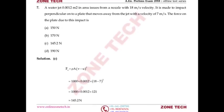Question number 7: A water jet of 0.0012 m² area issues from a nozzle with 18 m/s velocity, impacting perpendicular on a plate moving away at 7 m/s. Find the force on the plate. Force = ρA(V - u)², where V is jet velocity and u is plate velocity. Since the plate moves away, minus sign is used. Solving: value is 145.2 N, answer is C.